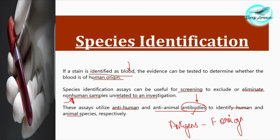Antibodies, also called immunoglobulins, are capable of reacting with antigens through certain antigen-binding sites which are very specific to those antigens. Antibodies and antigens play a major role in the species identification procedures of biological fluids — in this case blood — helping us identify the species of a blood stain collected from the scene of crime.